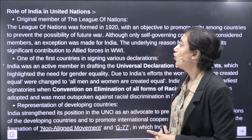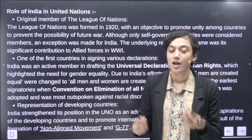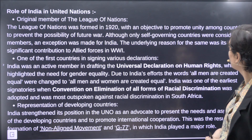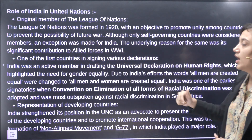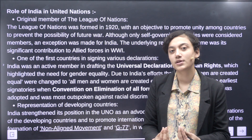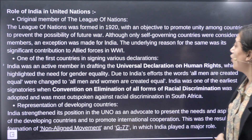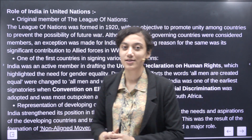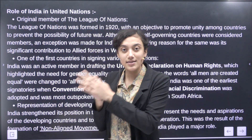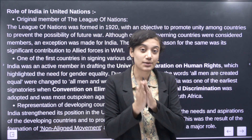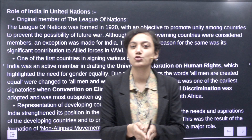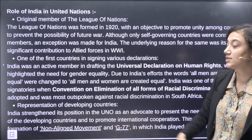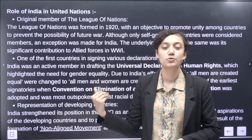What is India's role? India was an original member of the League of Nations, which was formed in 1920 with an objective to promote unity among countries and prevent future war. Although only self-governing countries were considered members, an exception was made for India. In 1920, India was under British rule, yet India was still considered part of the League of Nations. The underlying reason was its significant contribution to allied forces in World War I.